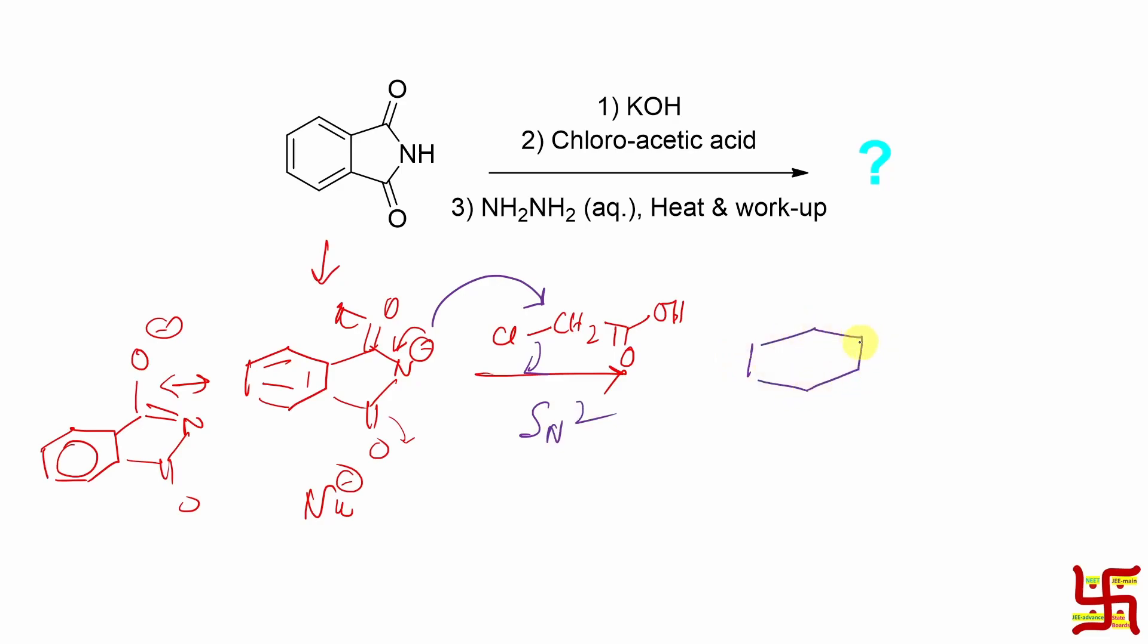So product is, it is simply nothing but an SN2 reaction, substitution nucleophilic bimolecular. So in this way, here N is substituted. So N attached to CH2, C double bond O H is produced. This is the product of this reaction.